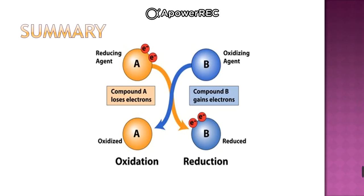This is the summary: reducing agents are electron donors. Compound A here is the electron donor — it is donating electrons, so compound B is getting reduced. Compound B is gaining electrons. Compound A is undergoing oxidation because it is losing electrons, and compound B is gaining electrons — we call it reduction. This is the overall summary.